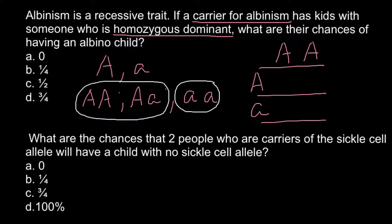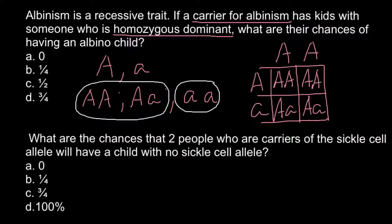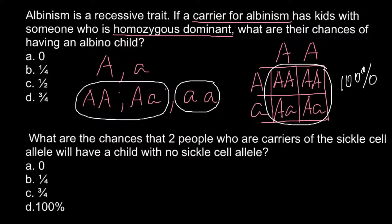We put the homozygous dominant parent on top and the carrier or heterozygous parent on the side. Building the Punnett square, we get: AA, AA, Aa, and Aa. As you can see, 100% of the progeny would be phenotypically normal — 50% would be carriers but still phenotypically normal, because both genotypes have at least one dominant allele. So the chances of having an albino child are zero. The correct answer is A: zero chances.